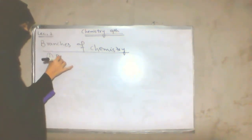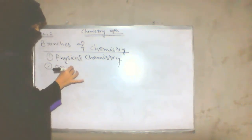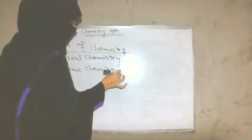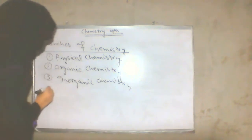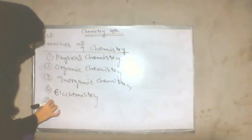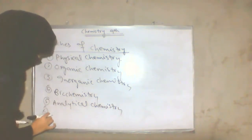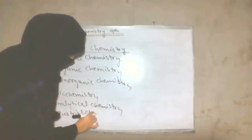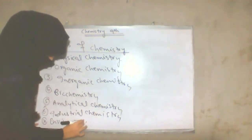The first branch is physical chemistry. The second is organic chemistry. The third is also organic chemistry. The 4th one is biochemistry. The 5th one is analytical chemistry. The 6th one is industrial chemistry. The 8th one is environmental chemistry and nuclear chemistry.